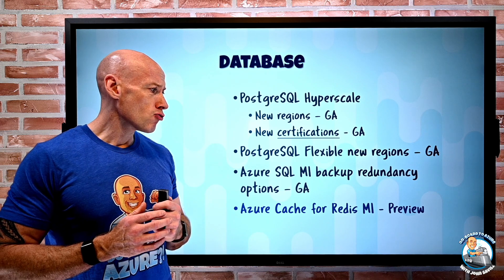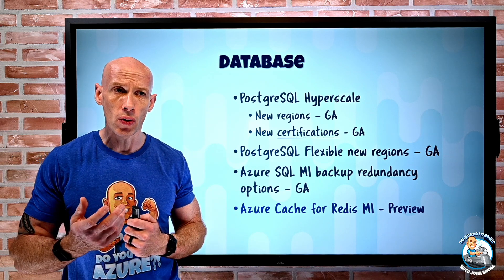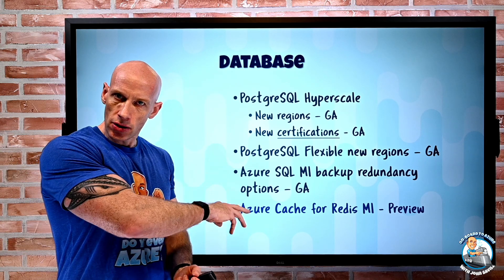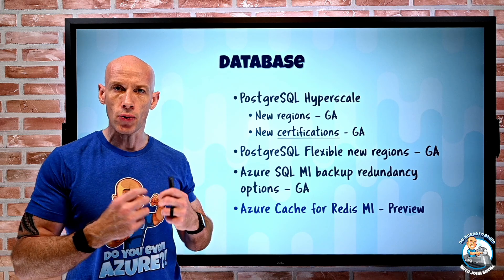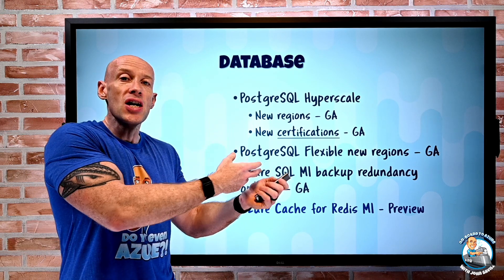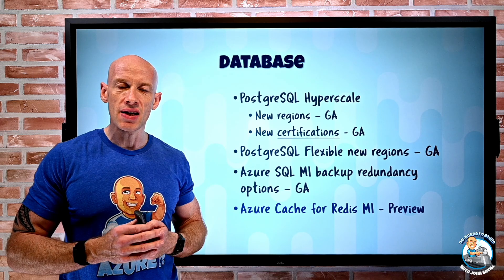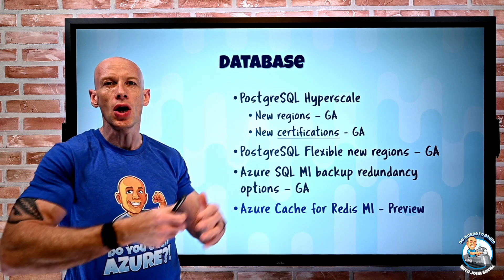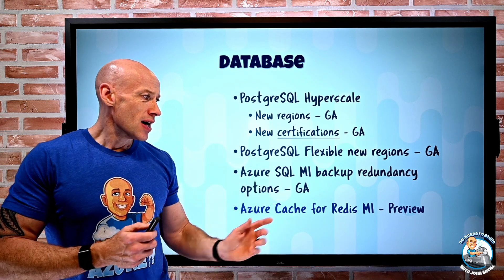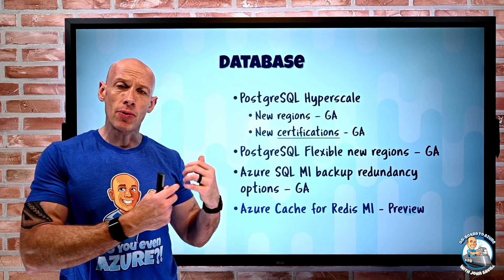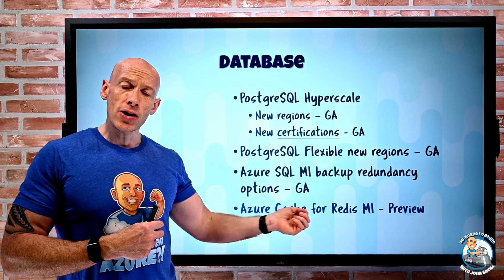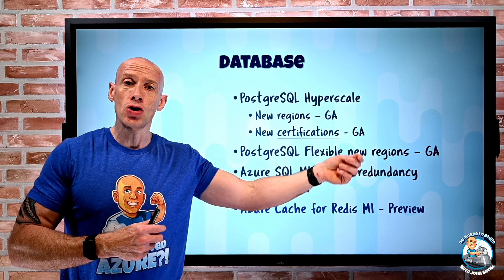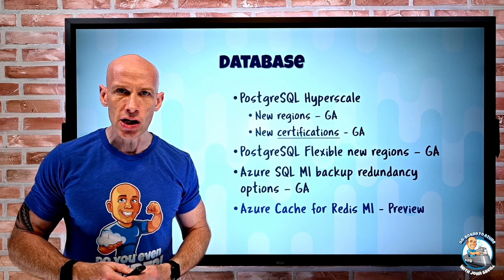Azure Cache for Redis now has managed identity support — in preview. This can be system assigned, where the lifecycle of the identity is linked to the resource, or user assigned, where I create the identity and give permission for various resources to use it. That's super useful if multiple resources need the same set of permissions. This is really useful where my Redis needs to talk to storage accounts — I can use the system or user assigned identity and give it permission on the storage account, so I don't have to worry about any credentials.